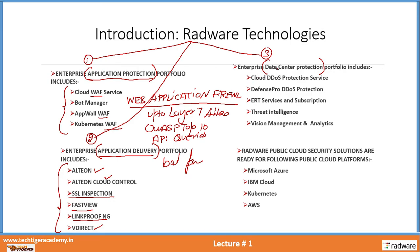Another portfolio that we have is data center protection. In data center protection, they have cloud DDoS protection and defense pro DDoS protection. They are very high-volume DDoS protection. Sometimes you need protection against unmetered and volumetric DDoS attacks. These solutions are for enterprises. Other solutions in the same portfolio include ERT services and subscription, threat intelligence, and vision management analytics.